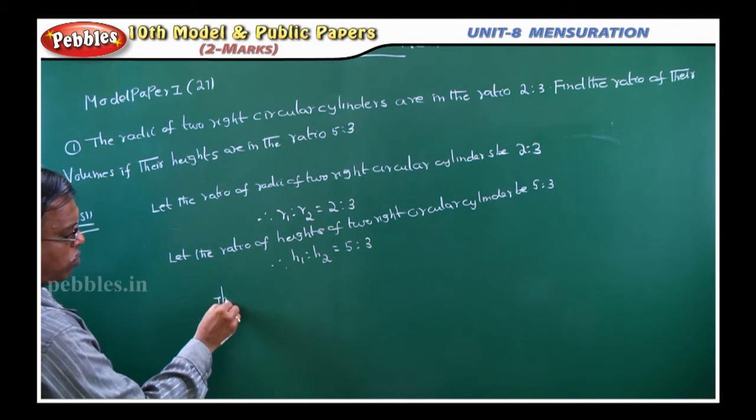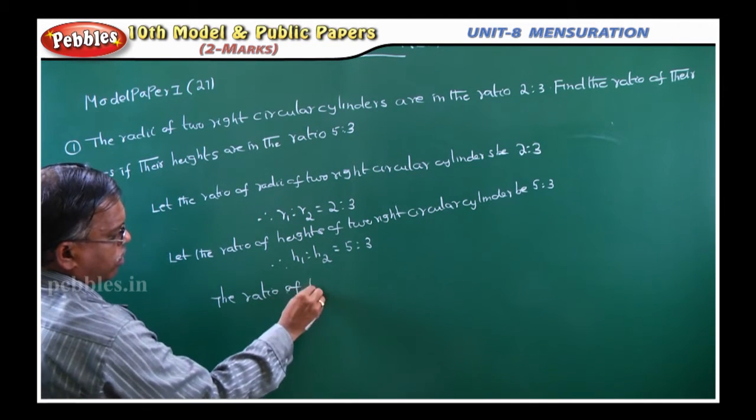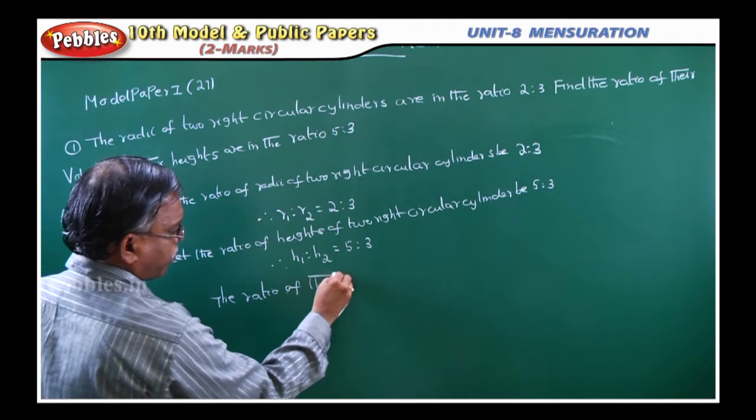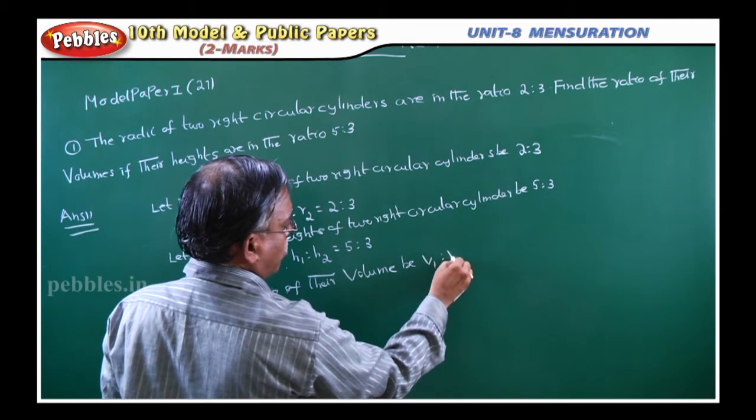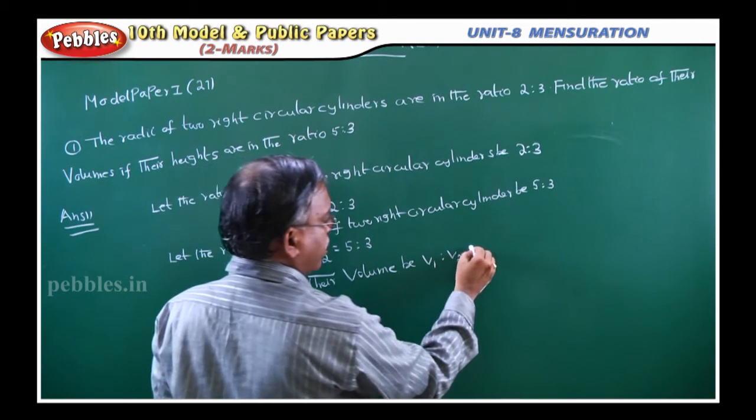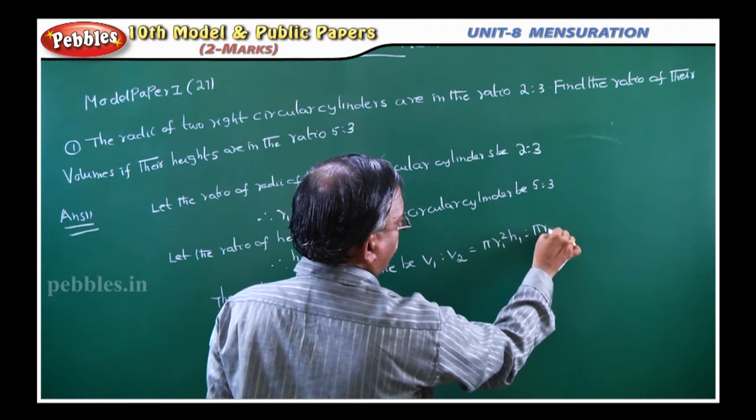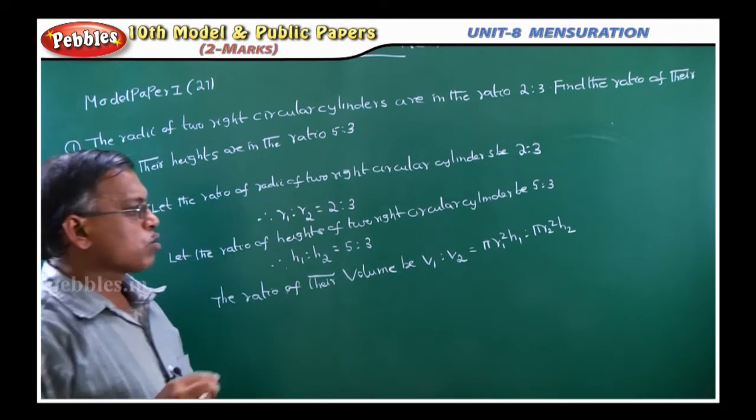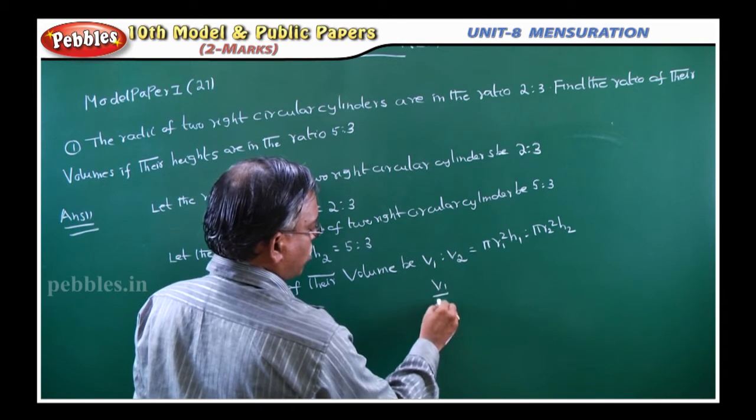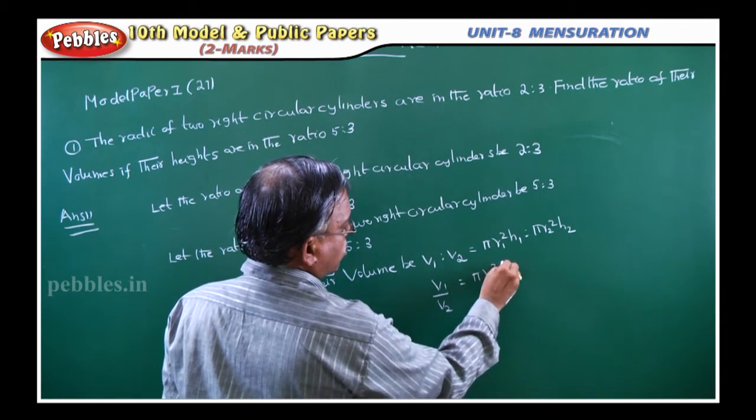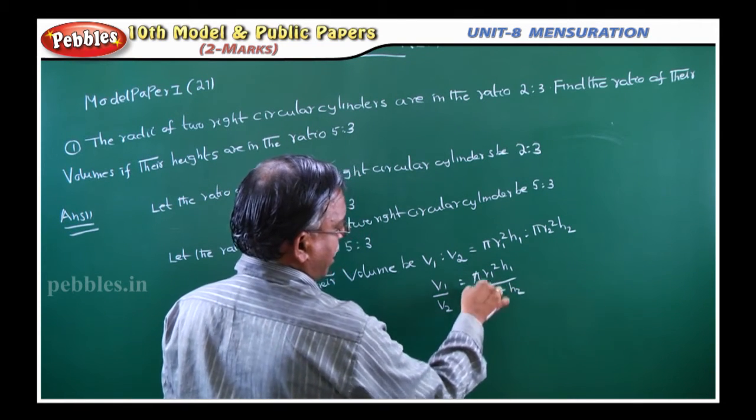Then, the ratio of their volumes. The ratio of their volumes v1 is to v2 is nothing but pi r1 square h1 is to pi r2 square h2. Ratio means v1 divided by v2. So v1 by v2 is equal to pi r1 square h1 divided by pi r2 square h2, pi pi cancel.